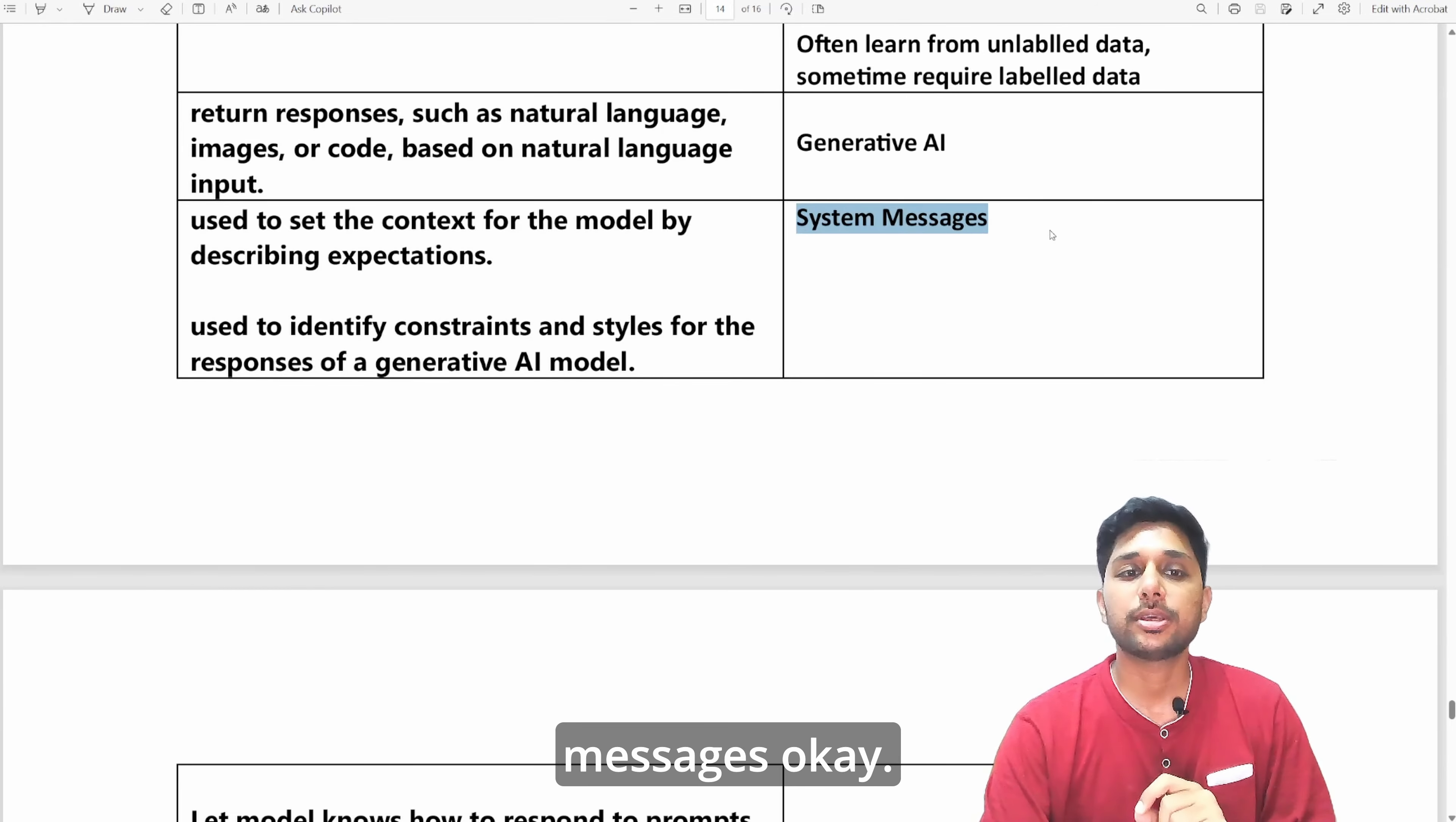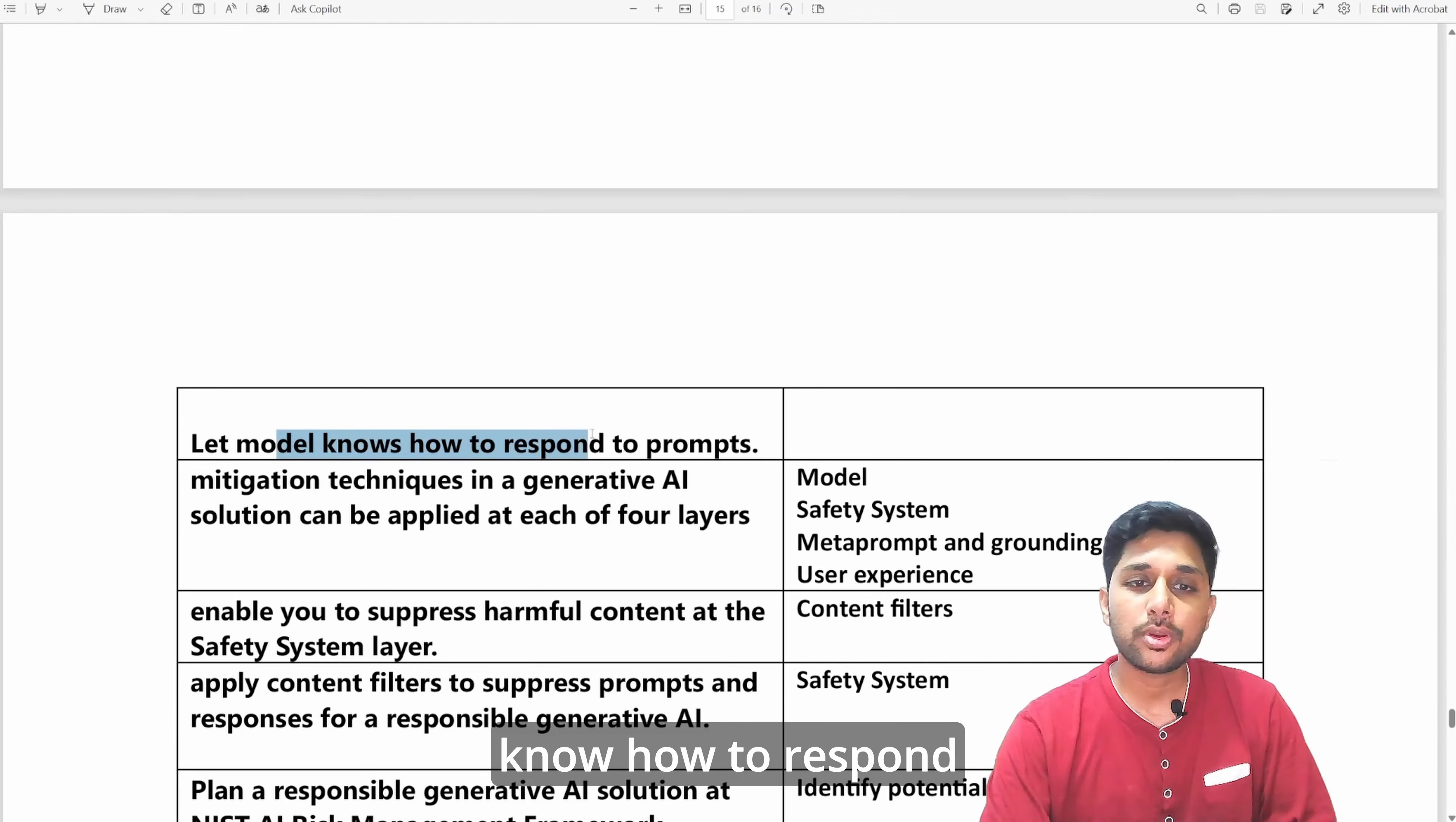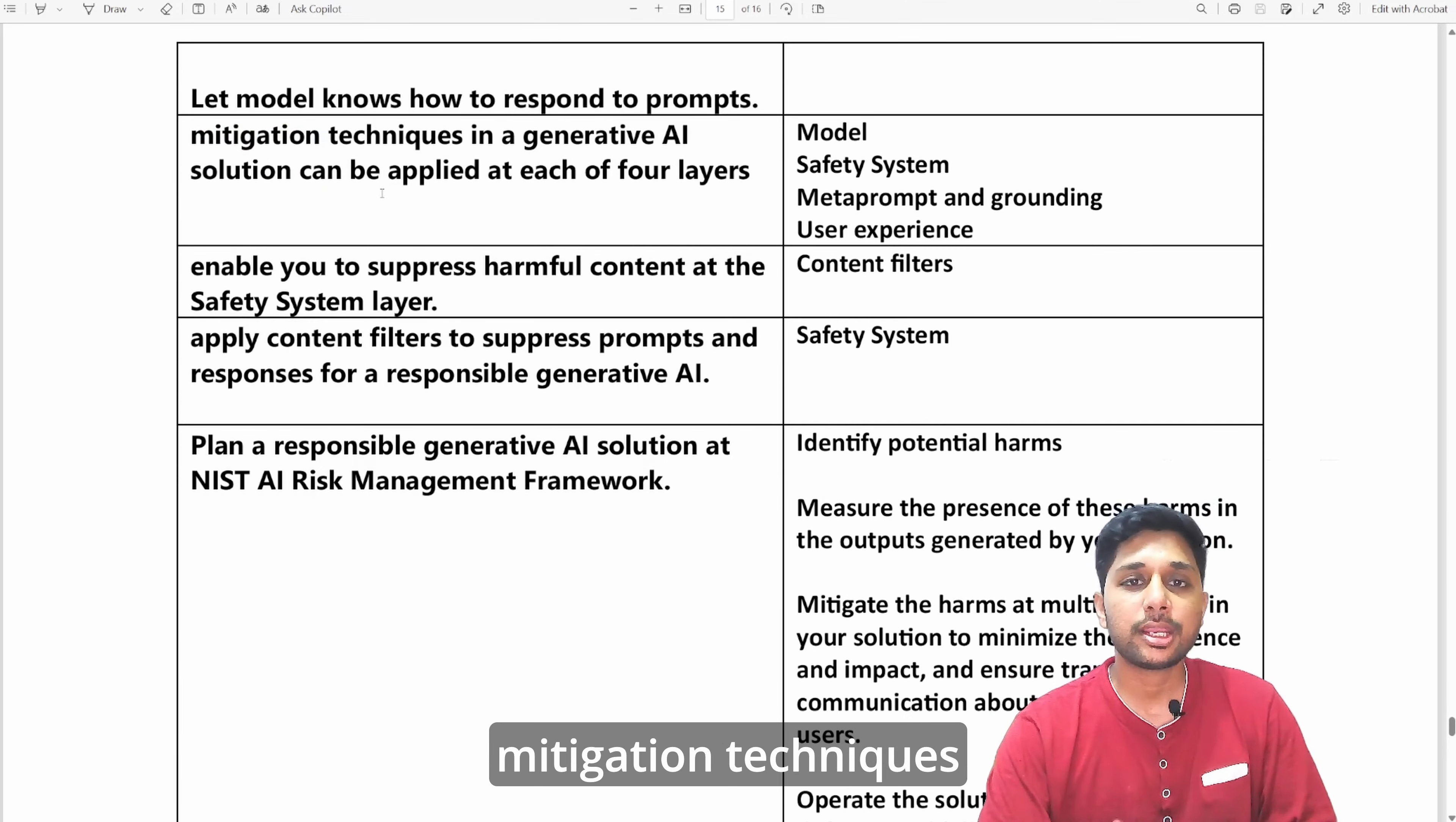So how am I going to tell ChatGPT or any generative AI model? I am going to tell them using system messages. This way you can set up the context and identify the styles and set up the styles and basically let your model know how to respond to the prompts. Prompt is basically the input which any user is giving.